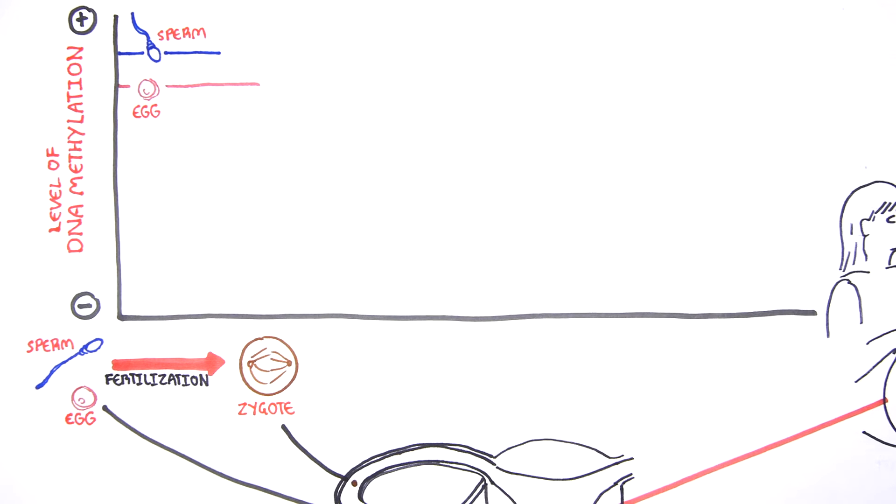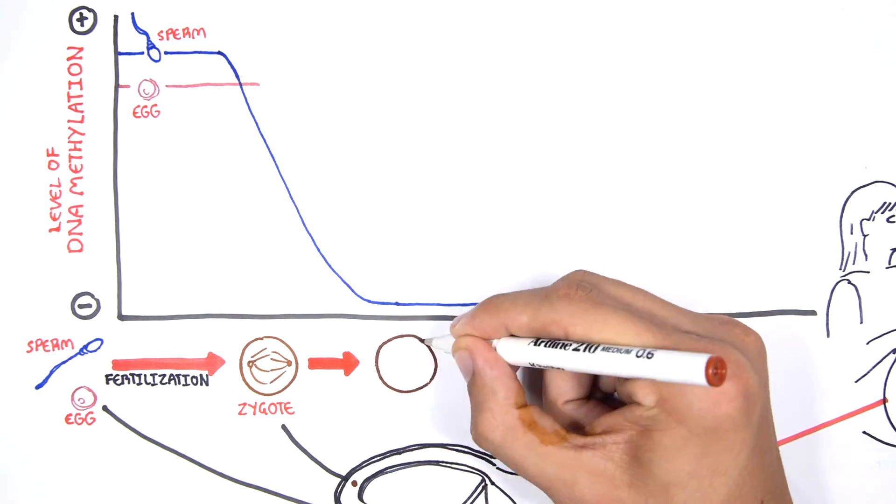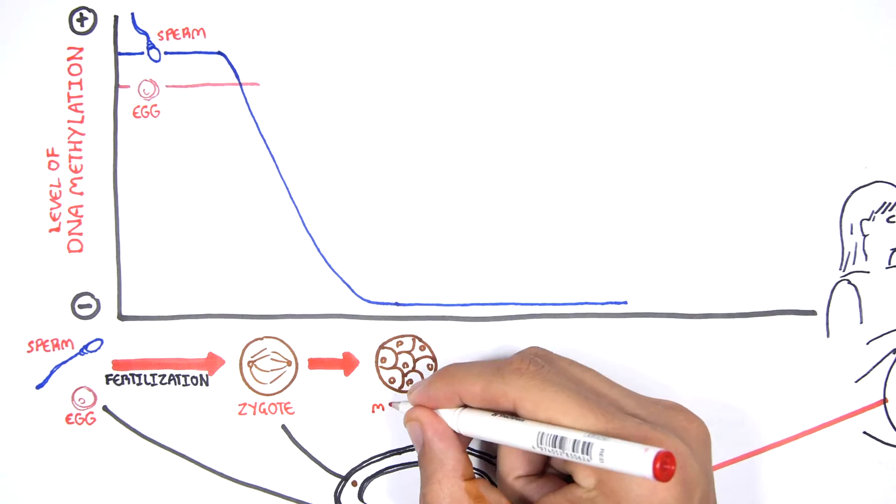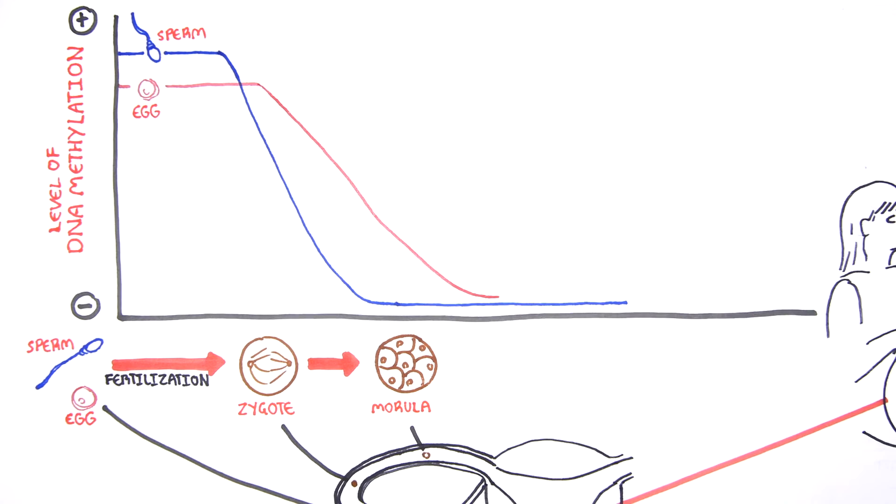The paternal epigenome then rapidly undergoes genome-wide active DNA demethylation and remains demethylated following multiple rounds of cell division. The maternal epigenome undergoes gradual, passive demethylation.